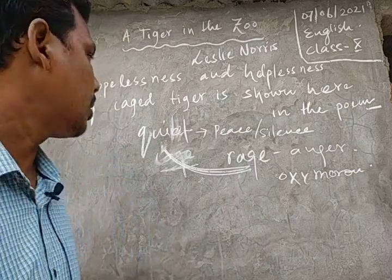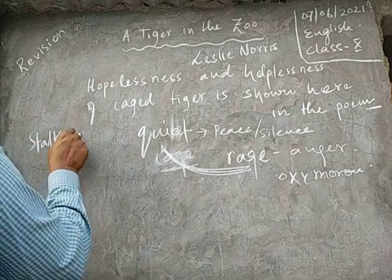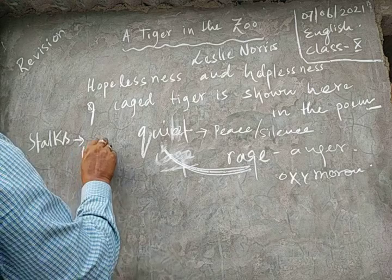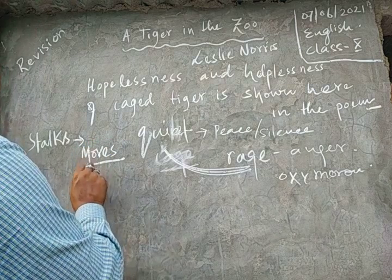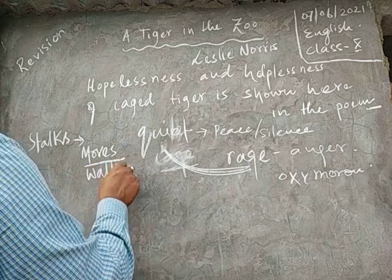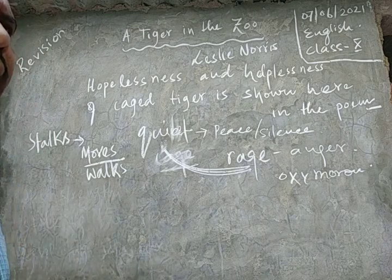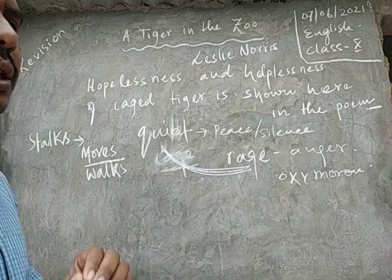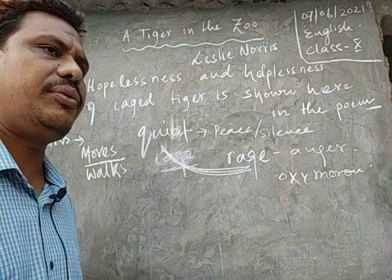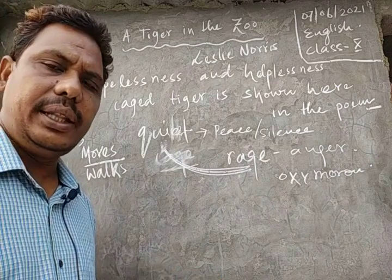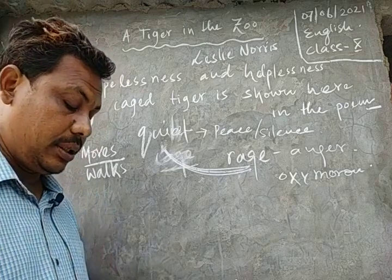He stalks — stalks means moves, walks. He moves and walks inside the cage with only a few steps. Why does the tiger move with only a few steps? Because he is bound. He does not have any freedom to jump, run, or walk freely as he can in the field or in the jungle. Now let us come to the next stanza.